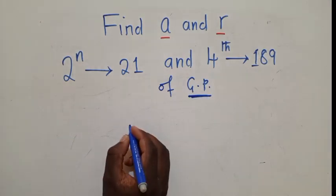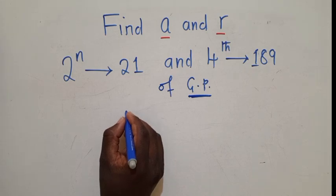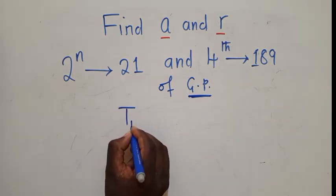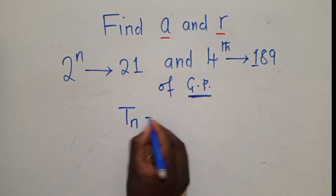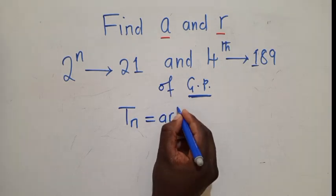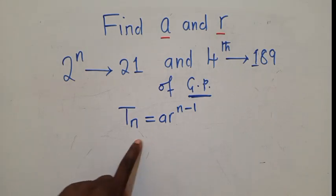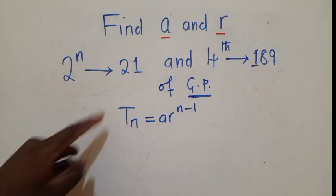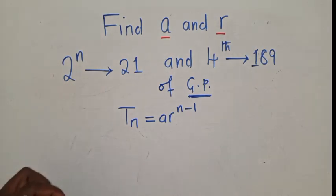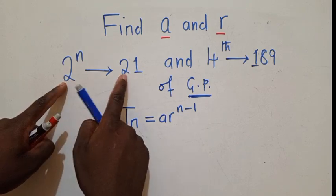To find the term, the formula we use is T subscript n equals ar to the power n minus 1. This is the formula we need to depend on. So once we get this formula, we are going to start with the second term.